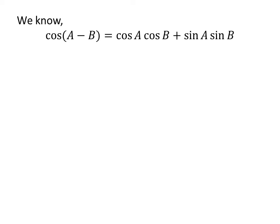As we know, the trigonometry identity cosine of a minus b is equal to cosine of a times cosine of b plus sine of a times sine of b.